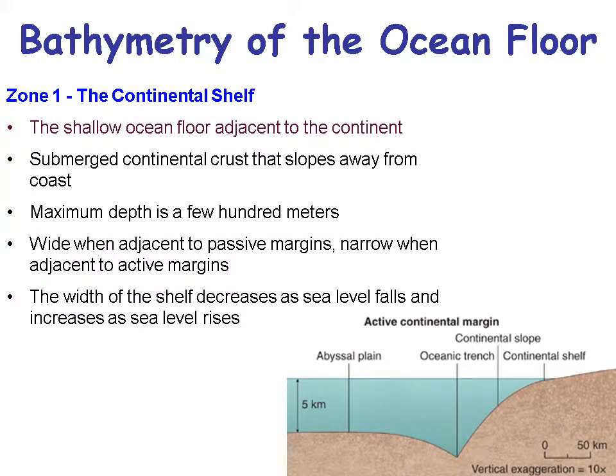Let's talk about the continental shelf. It's the shallow ocean floor adjacent to the continent — either a passive or an active margin — where submerged continental crust slopes away from the coast. Its maximum depth is only a few hundred meters. It's narrow along an active continental margin but really wide on a passive continental margin. The continental slope is the edge of the continental shelf that drops down into the abyssal plain or the oceanic trench, depending on whether it's an active or passive margin.